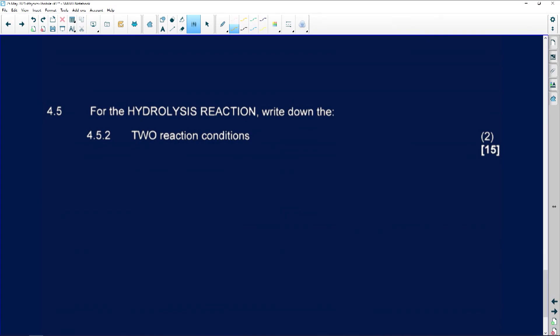And then the last question. For the hydrolysis reaction I must write down two conditions. Conditions are what is needed for the reaction to take place. You could have written any two. You do need mild heat. You also need a dilute strong base. This could have been NaOH, you could have said lithium hydroxide or you could have said potassium hydroxide, or you could have said water. So for this reaction to take place these are the type of conditions that you would have needed.